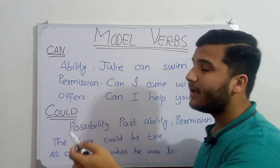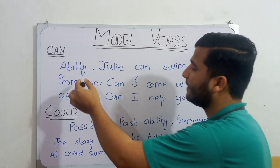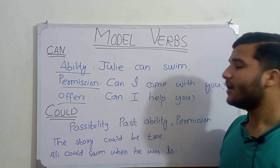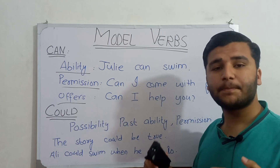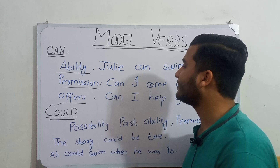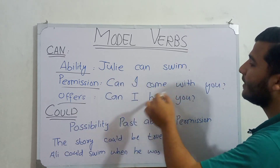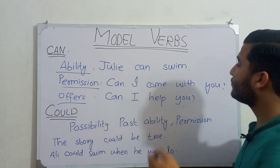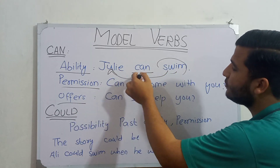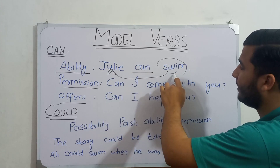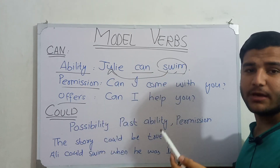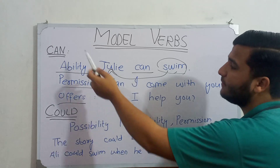The first modal verb is 'can.' It has three functions in English grammar: ability, permission, and offers. Ability means whenever someone can do something, we use 'can' to express that ability. For example, 'Julie can swim.' Swimming is the ability of Julie, so here 'can' expresses Julie's ability.